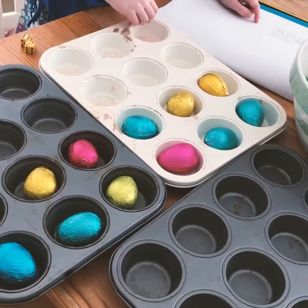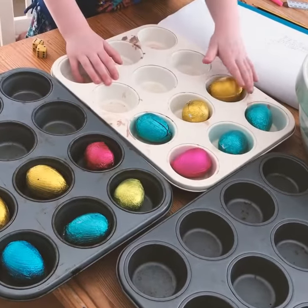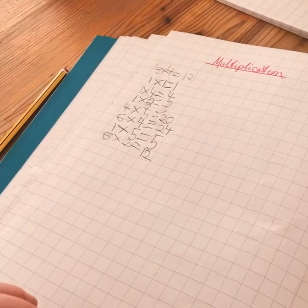So like six times two, for example, you would have six in a row. You've got two rows, two rows of six. Six times two equals twelve.